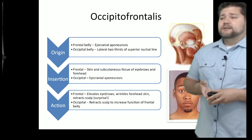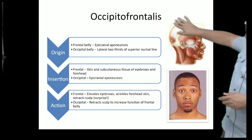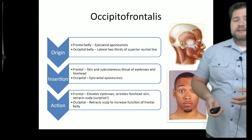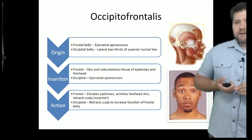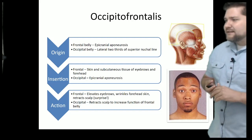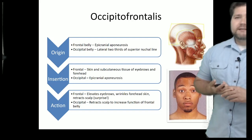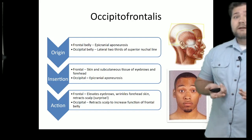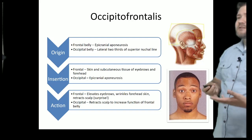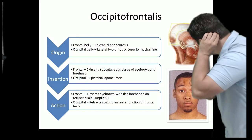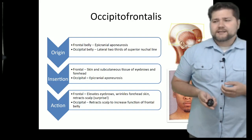The occipitofrontalis has a portion on the back and a portion on the front, connected by the aponeurosis — the A in our SCALP acronym. The frontal belly is what we use when we want to wrinkle our forehead and look surprised. The occipital belly helps support that by pulling on the frontalis muscle and lifting those fibers up to give that surprised look.